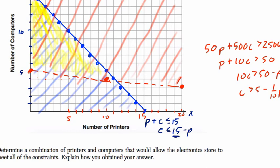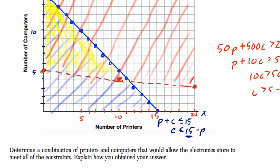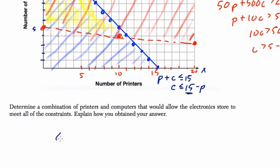So determine a combination of printers and computers that would allow the electronic store to meet all the constraints and explain how you know you're right. So I'm just going to pick a point in this region that's easy to work with. Any point in the region will do. You pick one that you think is easy to work with. I'm going to pick this point right here. I like that one of the numbers is 0 on this point. So for that point, it's the point 0, 10. To explain how I know, I'm going to plug it into both inequalities.